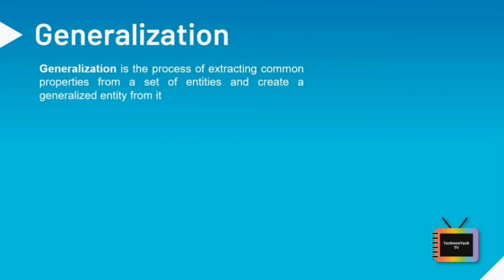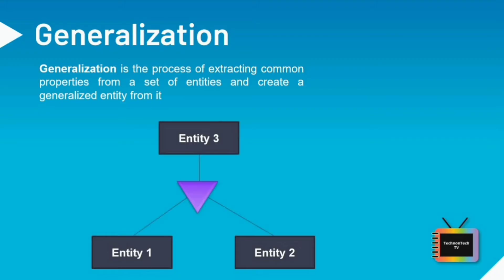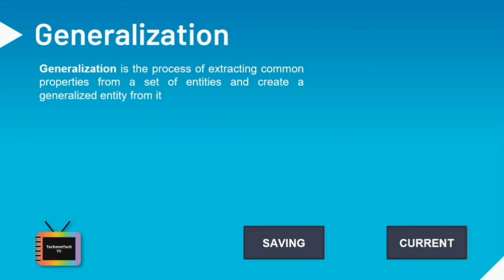Generalization is a bottom-up approach in which two lower-level entities combine to form a higher-level entity. The higher-level entity can also combine with other lower-level entities to make further higher-level entities. It's more like a superclass and subclass system, but the only difference is the bottom-up approach. Hence, subclasses are combined to form a superclass. For example, Saving and Current Account type entities can be generalized, and an entity with the name Account can be created.